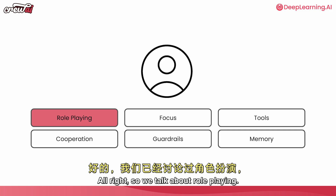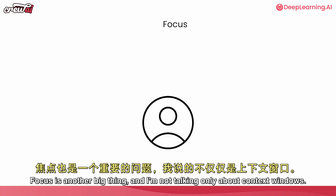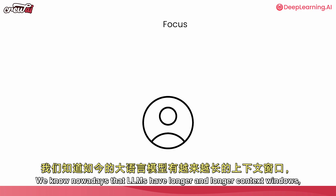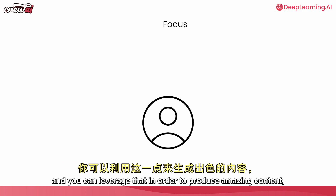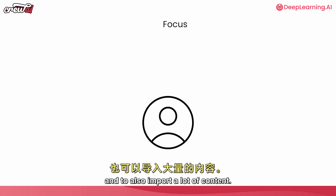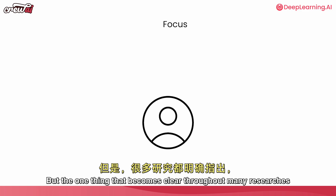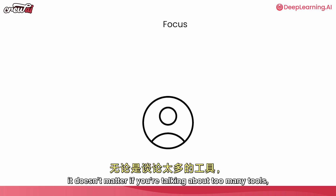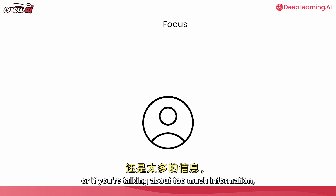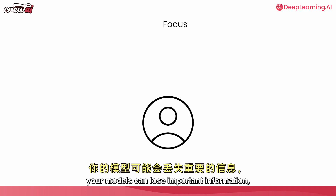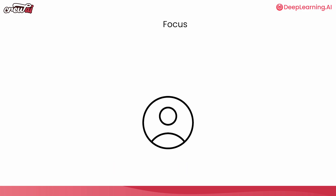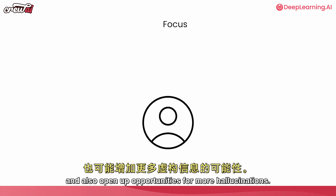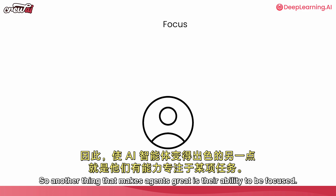Now let's talk about focus. Focus is another big thing, and I'm not talking only about context windows. We know that LLMs now have longer and longer context windows, and you can leverage that to produce amazing content and import a lot of content. But what becomes clear throughout many research studies is that if you mix things up too much — whether it's too many tools, too much information, or too much context — your models can lose important information and open up opportunities for more hallucination.